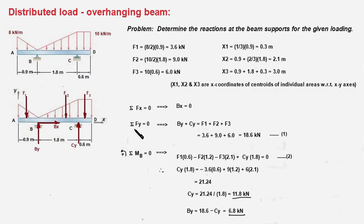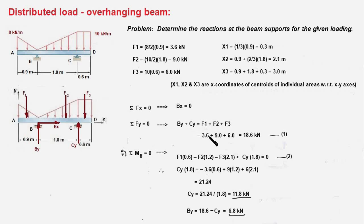Applying sigma FY = 0: BY + CY − F1 − F2 − F3 = 0. Plugging in the values of F1, F2, and F3, we get BY + CY = 18.6 kilonewtons — call this equation 1. Next, we compute the moment of all five forces about point B to eliminate BX and BY, giving an equation in the single unknown CY.